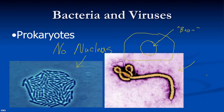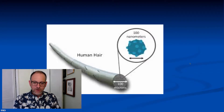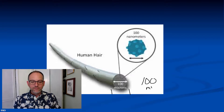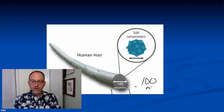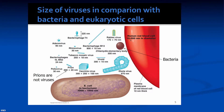They do not have a nucleus and so therefore they are called prokaryotes. Now let's talk about sizes. As you see here, we have a human hair listed as 100 microns, which is 100 micrometers — a thousandth of a millimeter. A human red blood cell is 10,000 nanometers, which comes out to 10 microns.